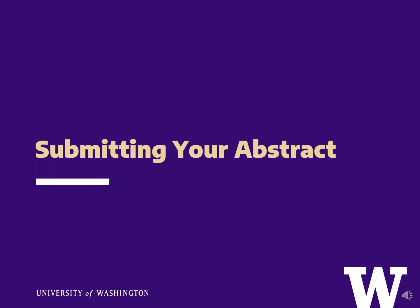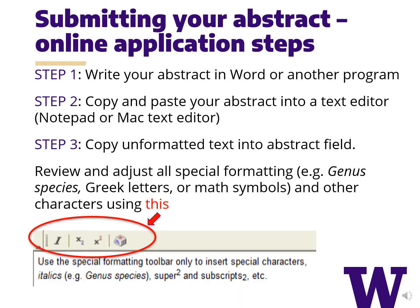Next we'll cover submitting your abstract, the review process for symposium, and a few details about the undergraduate research symposium. Step one is to write your abstract in Word or another word processing program. Step two is to copy and paste your abstract into a text editor such as Notepad or Mac Text Editor. Step three: copy the unformatted text into the abstract field, then review and adjust all special formatting — for example, species names, Greek letters, or math symbols — using the icons circled on the screen.